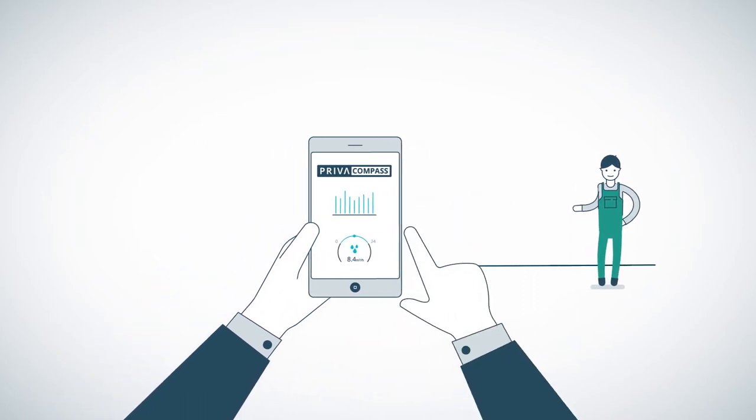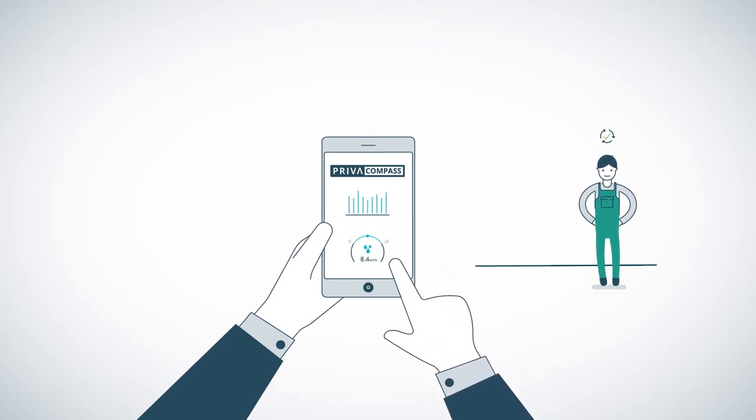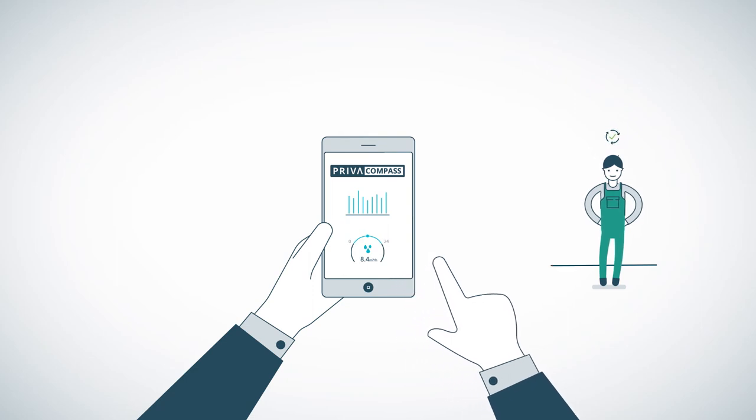The clear interface with intuitive dashboards and graphs will help you to understand and optimize your growing process. With Priva Compass, you are in control of three growth factors.